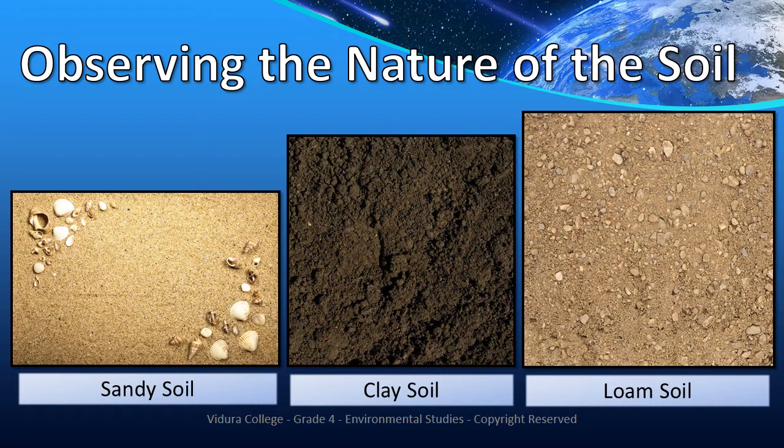Loam soil is taken from a school garden. Its color is brown and this soil consists of sand and gravel. You can see insects like ants, bugs, and grasshoppers, and you could also see some leaves.